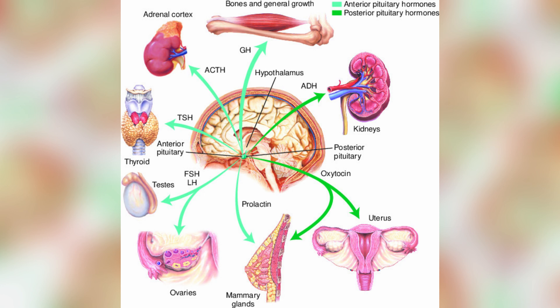These glands produce and secrete hormones into the bloodstream, traveling and affecting various target tissues in the body. Endocrine glands produce hormones and regulate the body's functions and development, metabolism, reproduction, growth, and sleep.